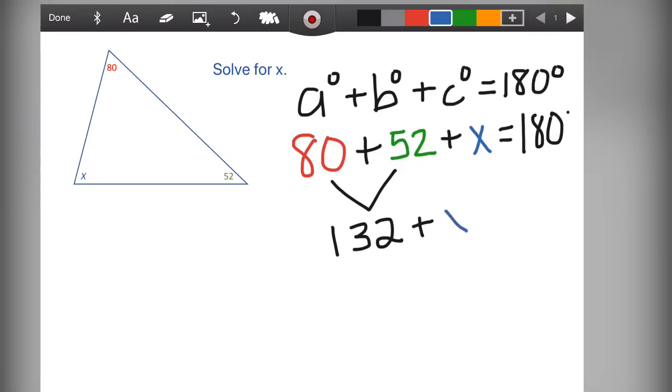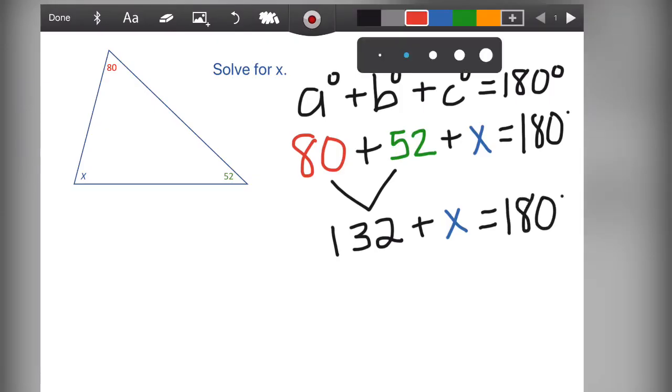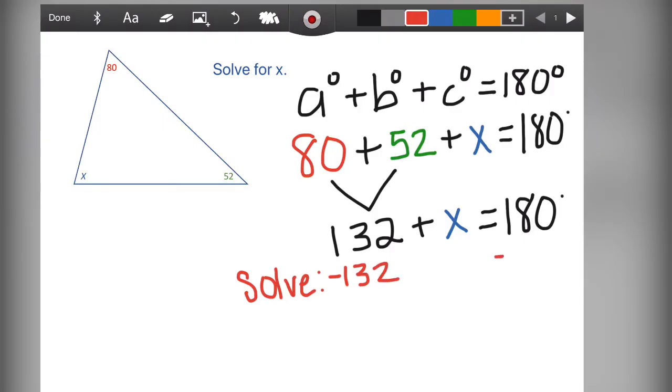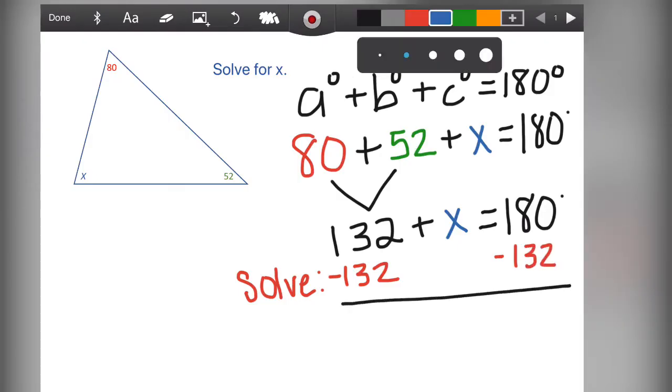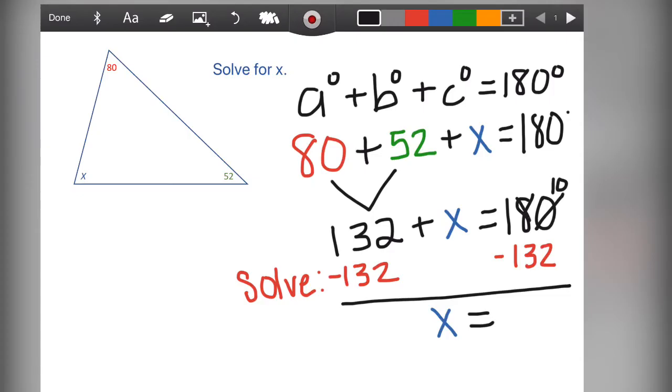X is still unknown at this point, and this is all equal to 180 degrees. This of course should look like an equation, and we know in order to solve an equation, we are going to be doing inverse operations. So we are going to subtract 132 from both sides of the equation in order to keep balance. That allows us to have X on the left side. And by doing the calculation of 180 minus 132, we will find out what X is equal to. Our math states that X equals 48.